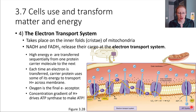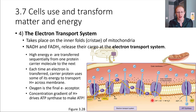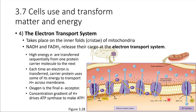The electron that started the chain ultimately gets handed off to oxygen and ends up forming a water molecule. So let's do a recap: cellular respiration allows us to make about 36 ATP molecules in total from one glucose, and most of that ATP comes from ATP synthase inside of the mitochondria.